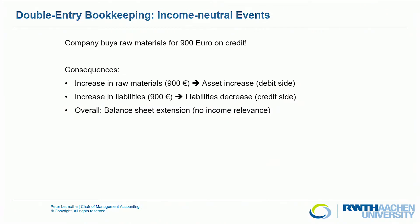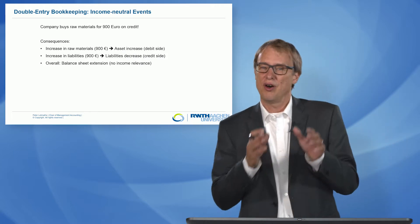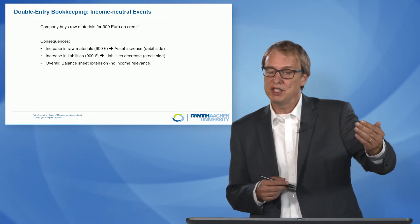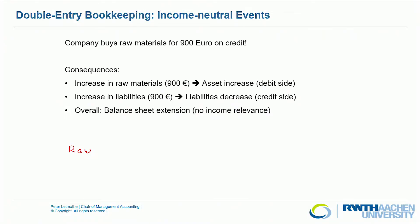We had an asset swap in the last example. Now we look at a different constellation. A company buys raw materials for 900 euro, but this time it is not paid in cash — it is bought on credit. On the asset side, we have an increase in raw materials by 900 euro, an asset increase. So it is clear we book raw materials on the left side of our book record.